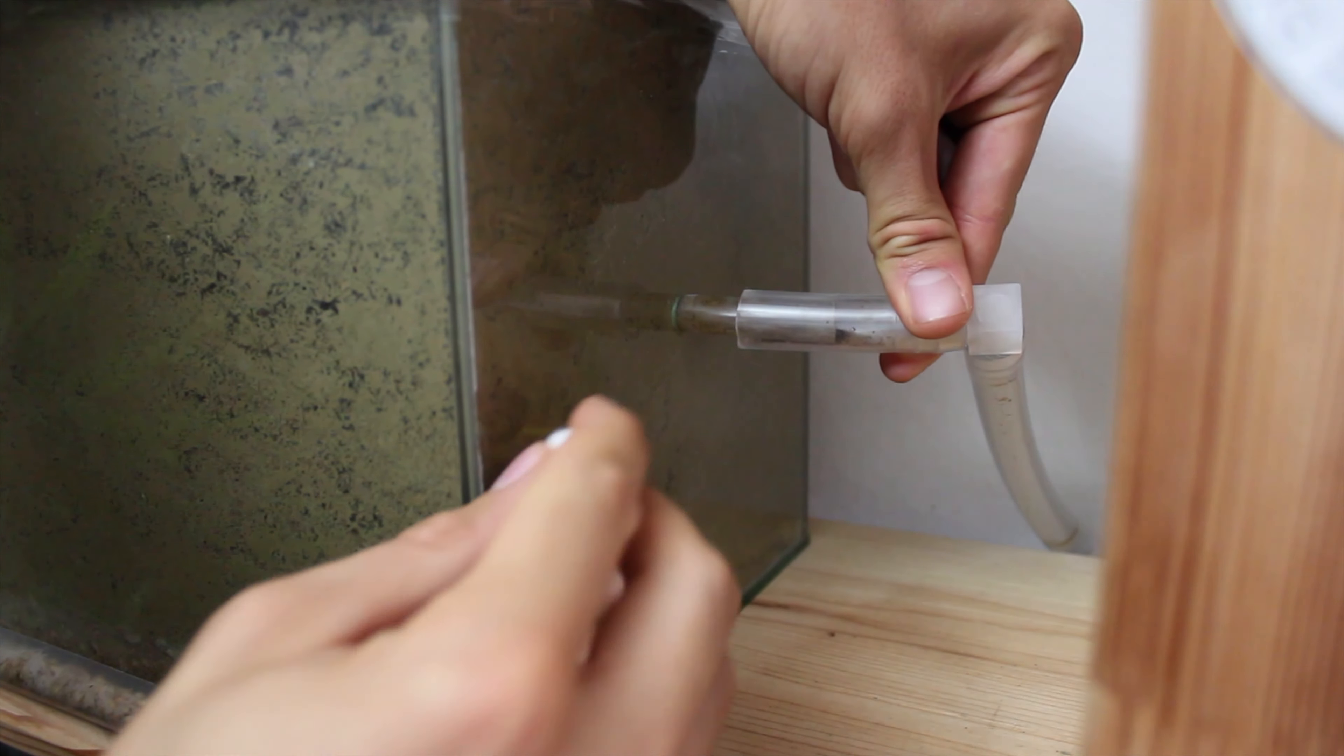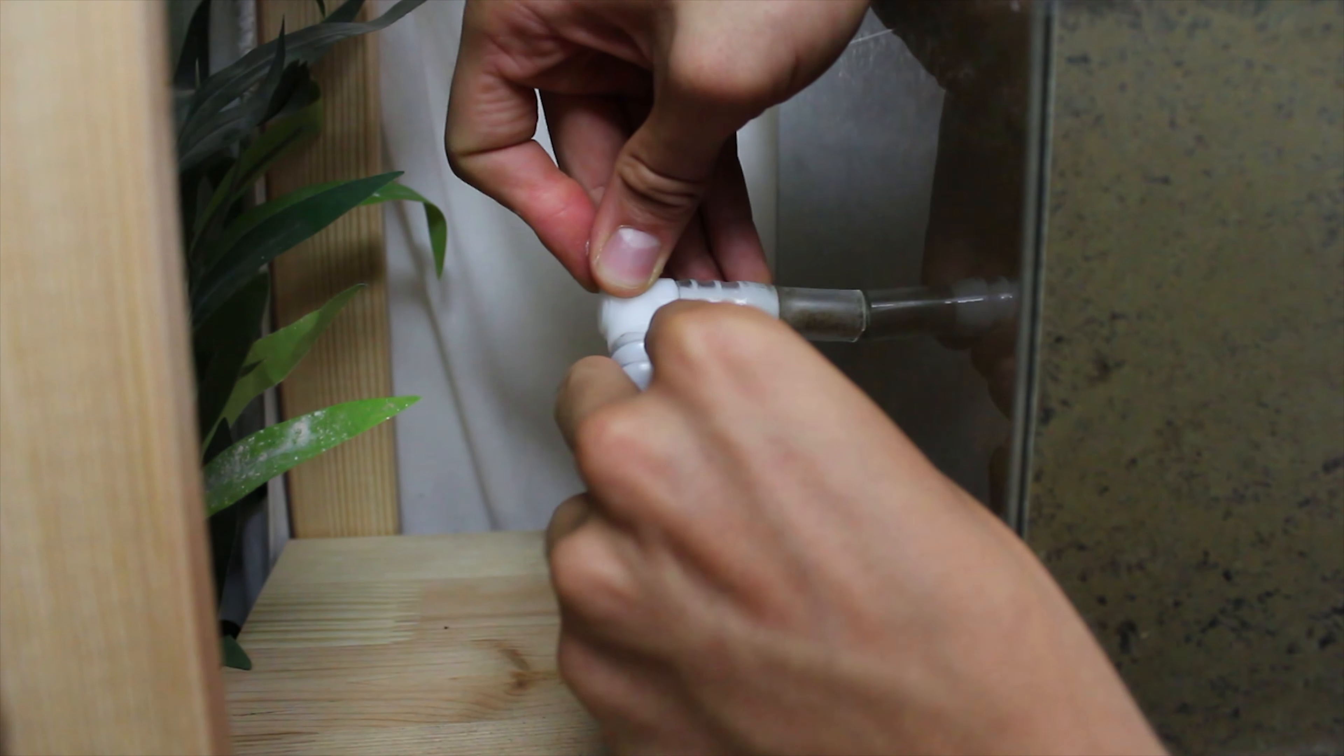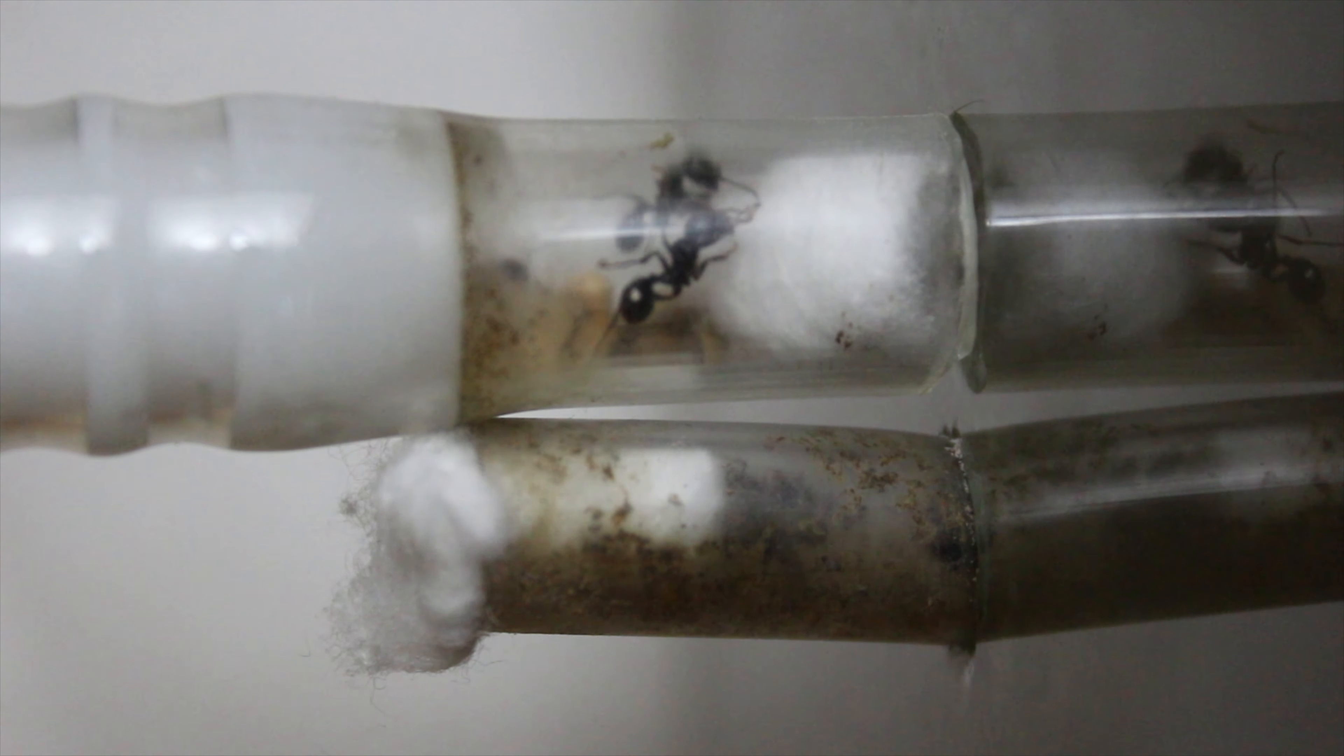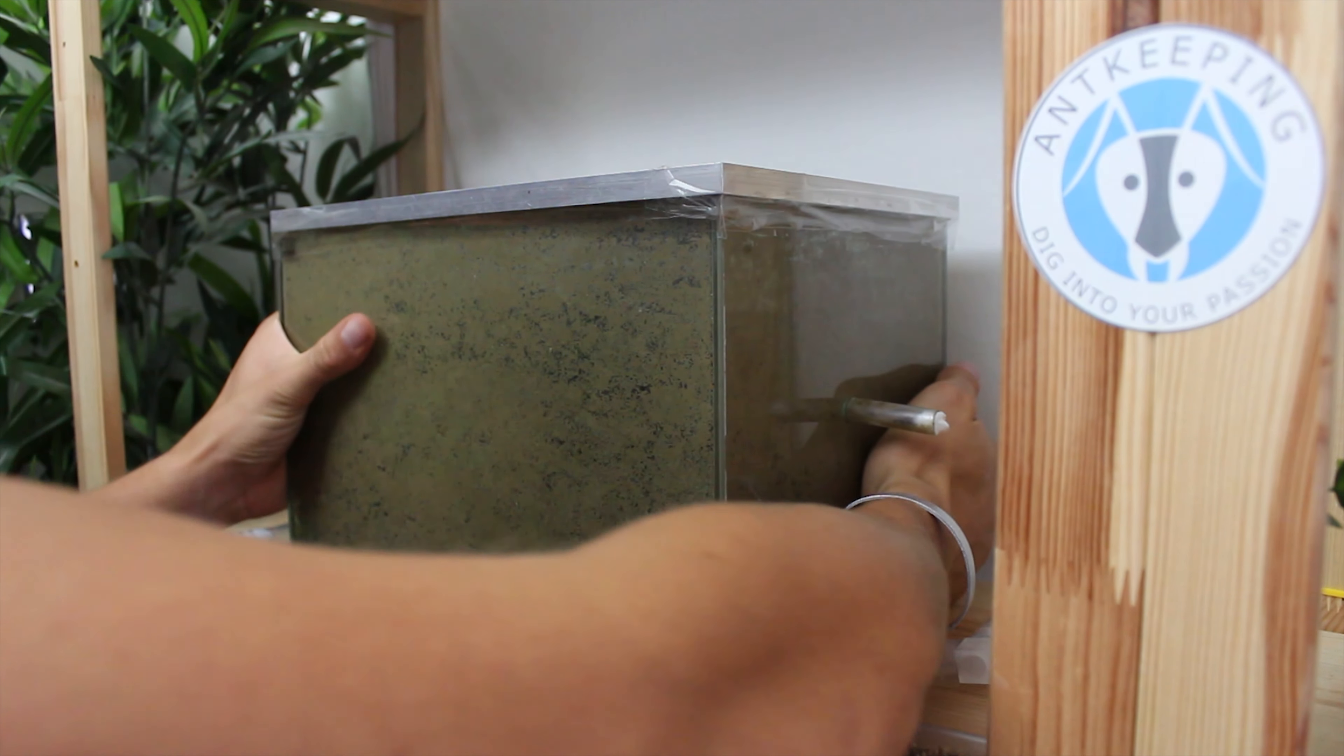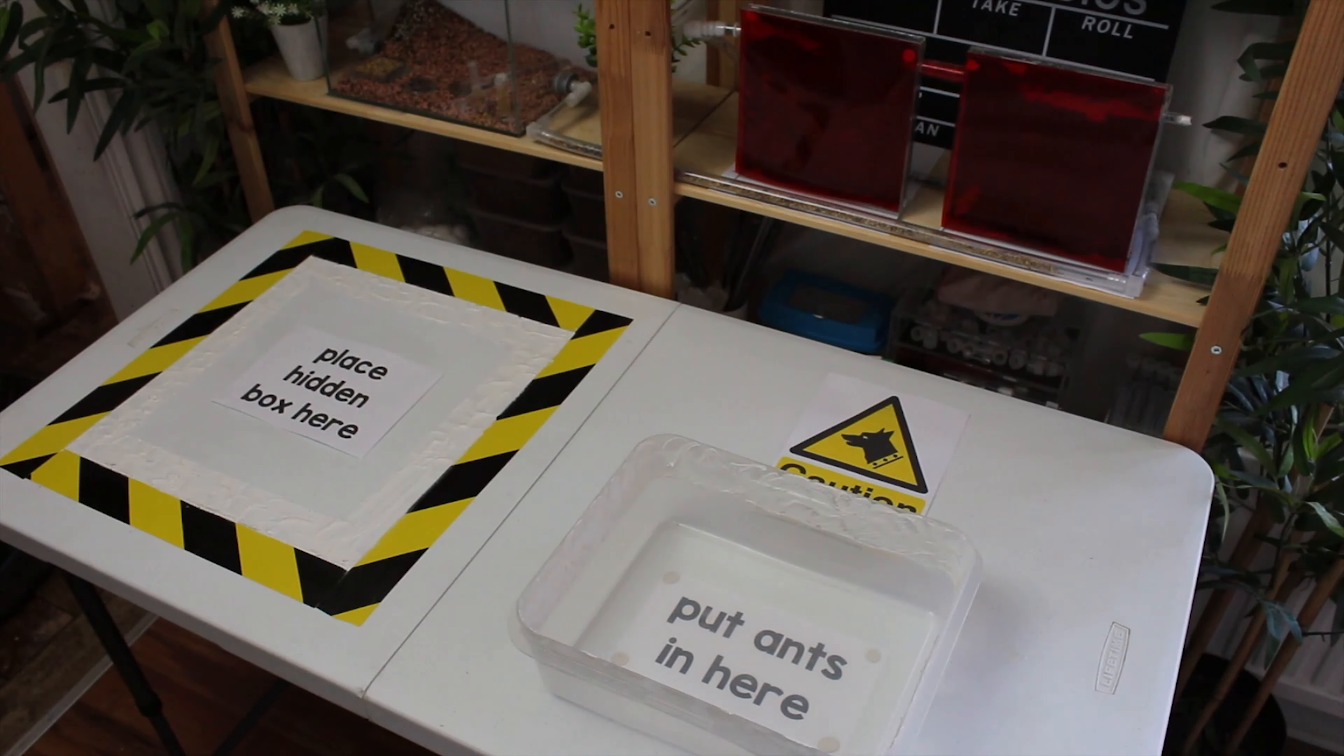Anyway, let's start by disconnecting these two pieces of tubing which act like gateways into the hidden box. I managed to walk away this time without any bites, but as you can see the ants in the tubing and the hidden box are now very agitated. So I think I will be wearing gloves from this point on where needed. Okay, now that the hidden box is completely disconnected from the setup, we can now remove it.